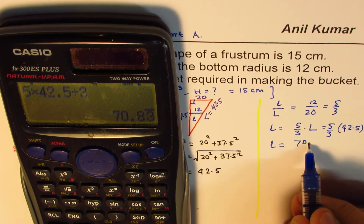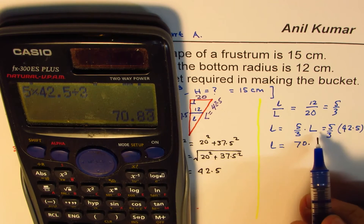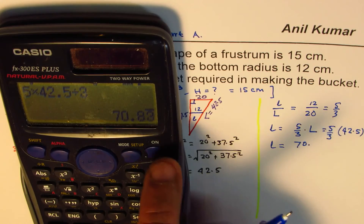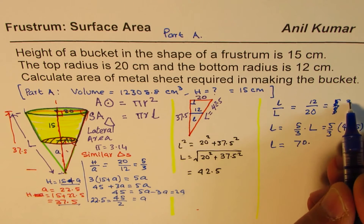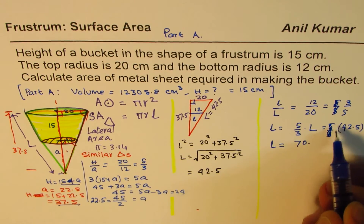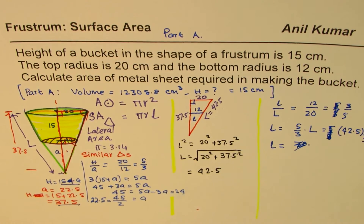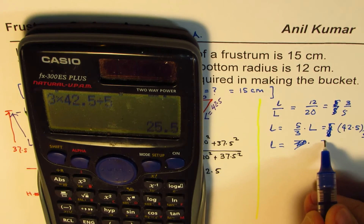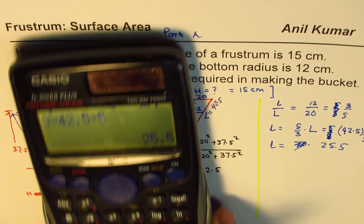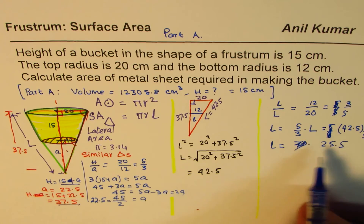I wrote the ratio in reverse initially — the small L has to be smaller, so it's 3 over 5, not 5 over 3. So small L = 3 × 42.5 / 5 = 25.5 cm. So now we know capital L = 42.5 and small L = 25.5.